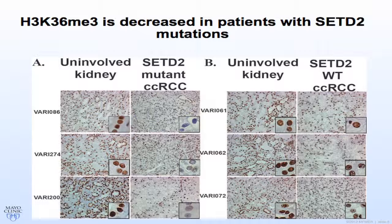An important in-slide control is that you still see staining of the lymphocytic infiltrate as well as the stroma. When you compare the uninvolved kidney to SETD2 wild type tumors — patients with VHL and PBRM1 mutations but wild type SETD2 — you don't necessarily see a decrease in histone 3-lysine 36 trimethylation. So using a simple IHC screen, you could potentially identify patients for further sequencing and exclude those without decreased H3K36me3.